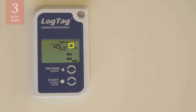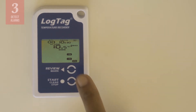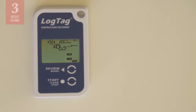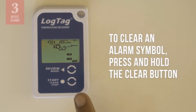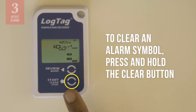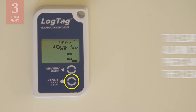The up arrow confirms that this temperature is above the 8 degrees Celsius limit. To find out more about this alarm, you can press review to see the day's maximum temperature. This display shows you the maximum temperature for the day as well as the duration of the high temperatures. Here, you can see that the maximum temperature was 10.5 degrees Celsius and that temperatures were above 8 degrees Celsius for 10 and a half hours. To clear an alarm symbol, press and hold the round button next to the word clear. The alarm data will be stored and can be viewed for 30 days.